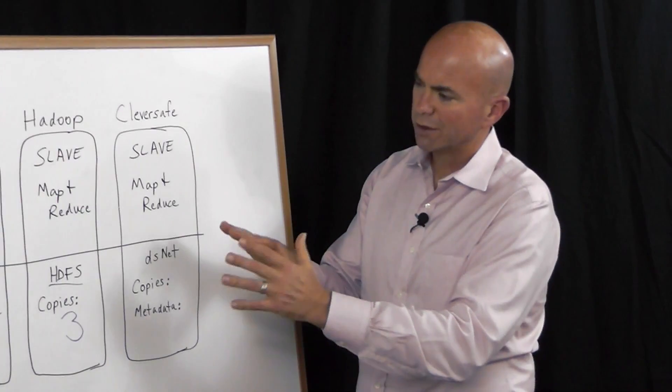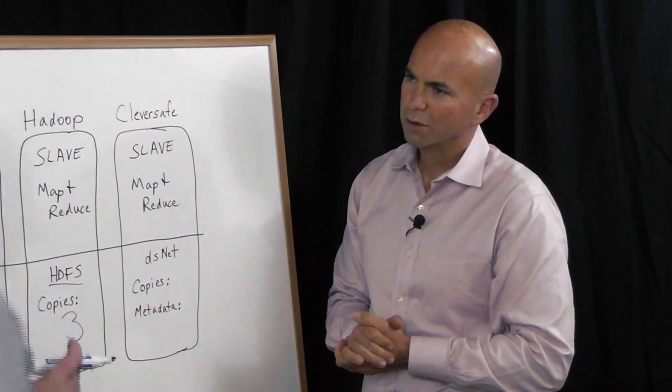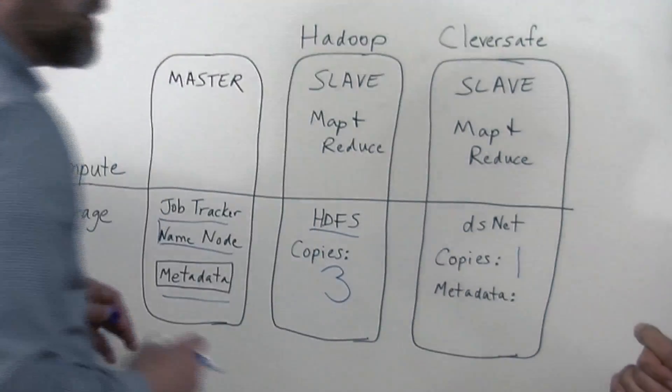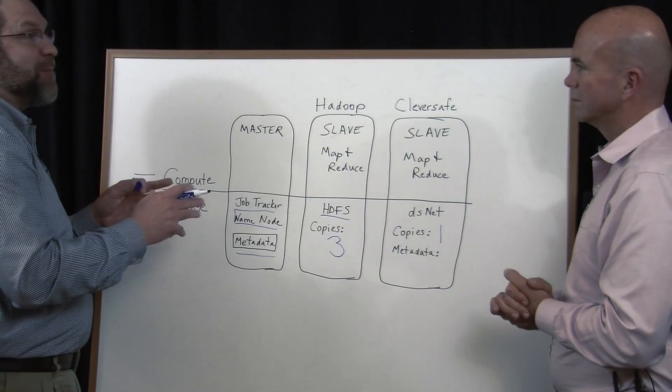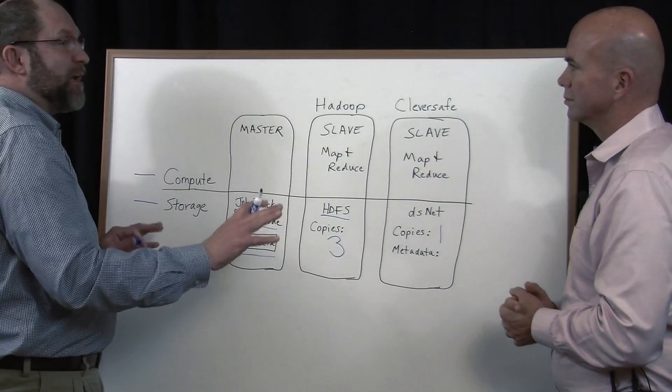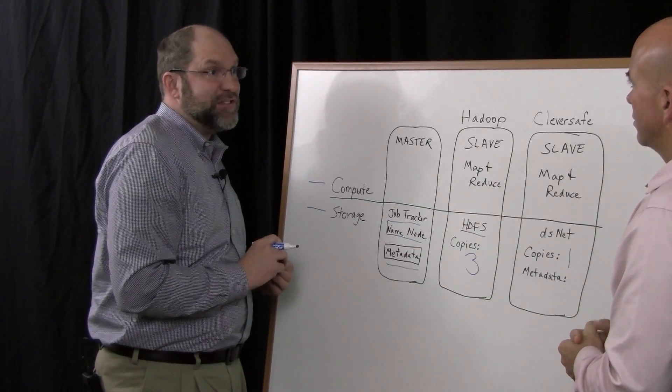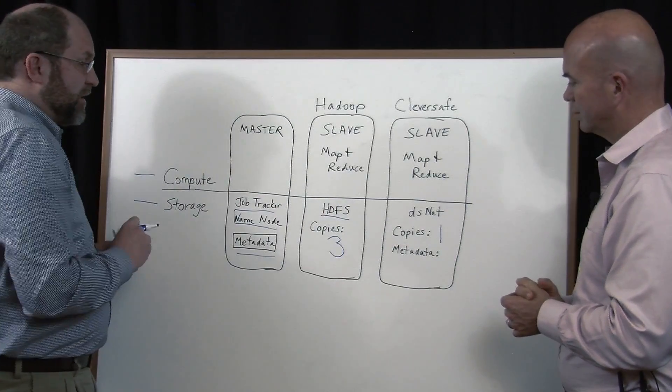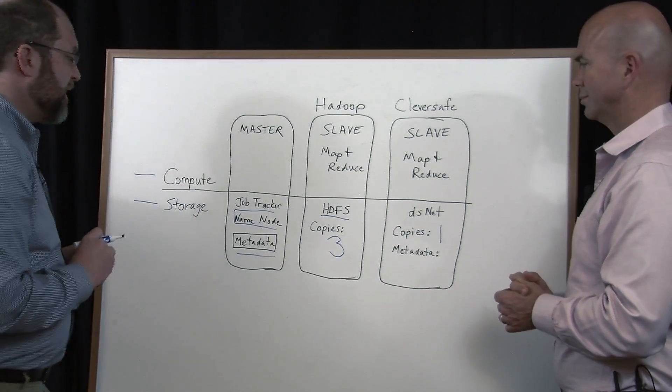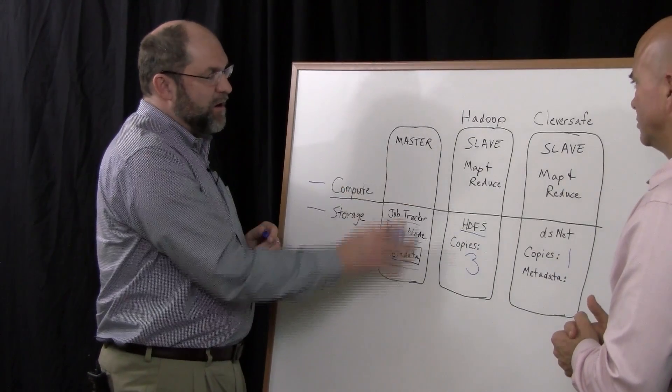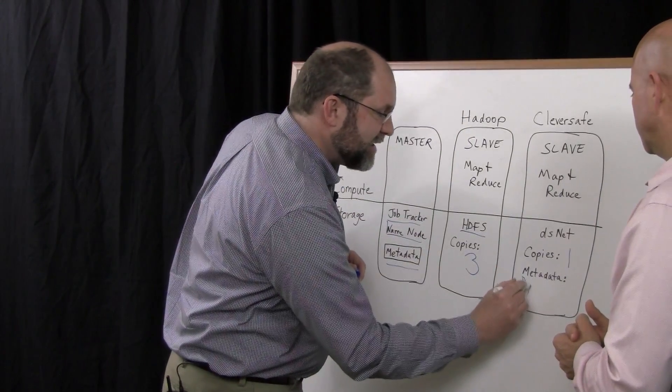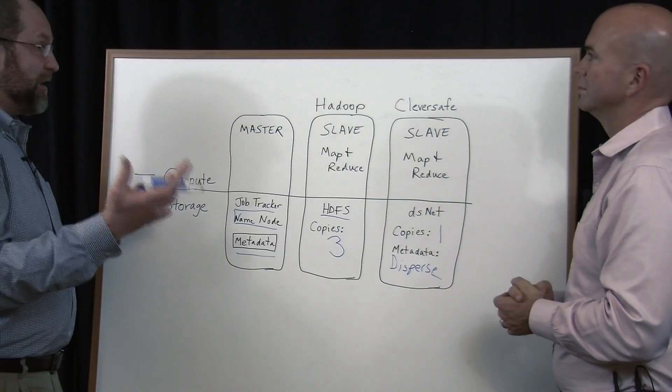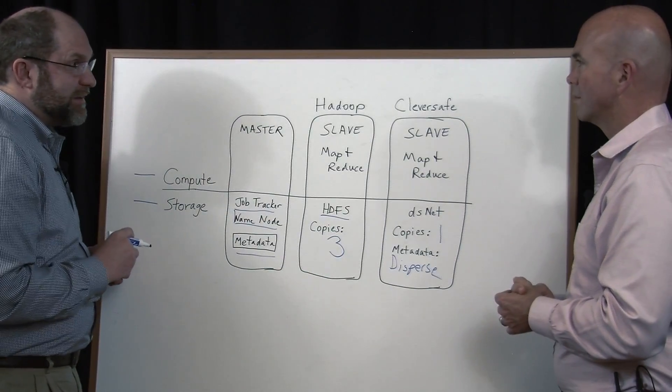So those are the key challenges. How does CleverSafe really address these issues? So, first, instead of making three copies of the data so that it's stored reliably, we use our dispersed storage network technology to take a single copy of the data and store it across the cluster in a way that's even more reliable than three copies of data stored in HDFS. So you get more reliable storage at a fraction of the storage cost than with the generic or vanilla Hadoop implementation.